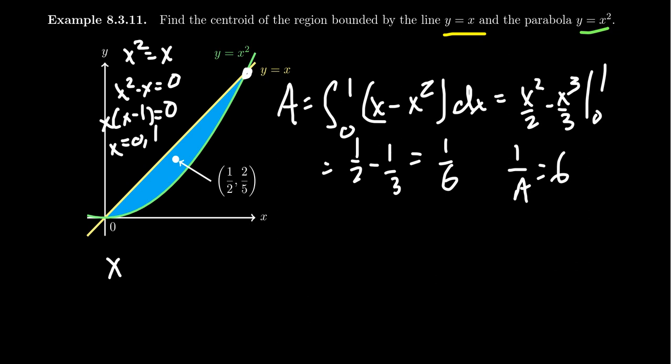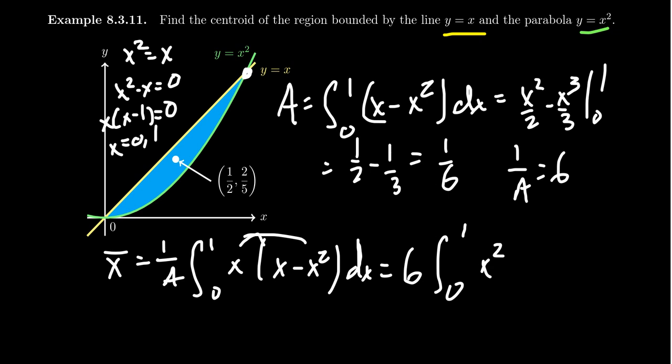Now, next, to do x bar, we have to do 1 over a, the integral from 0 to 1, x times, what did our formula say? It said f of x minus g of x. So, again, take the bigger function, x minus x squared, dx. This is very similar to what we just did, although we do need to distribute things here. So we're going to get 6 times the integral from 0 to 1 of x squared minus x cubed.